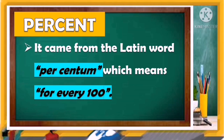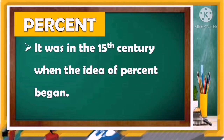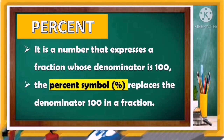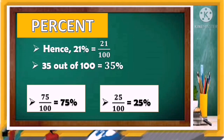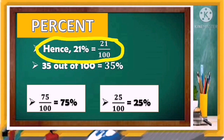Let's read the definition of percent. Percent came from the Latin word 'percentum,' which means 'for every one hundred.' It was in the 15th century when the idea of percent began. When we say percent, it is a number that expresses a fraction whose denominator is 100, and the percent symbol replaces the denominator 100 in a fraction.